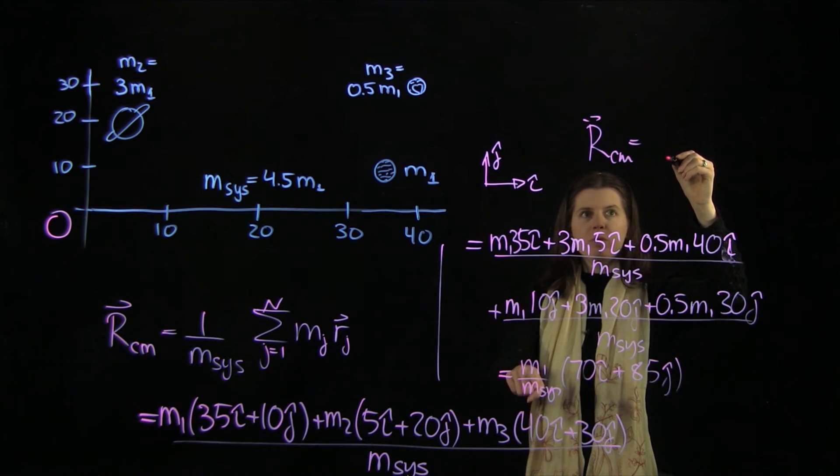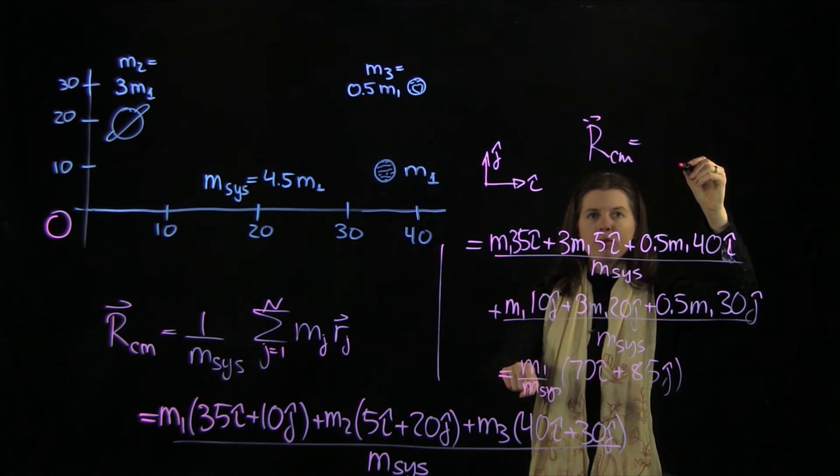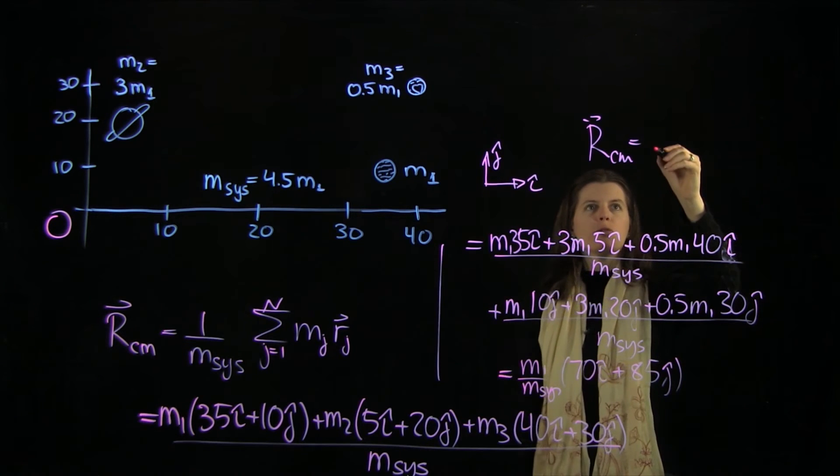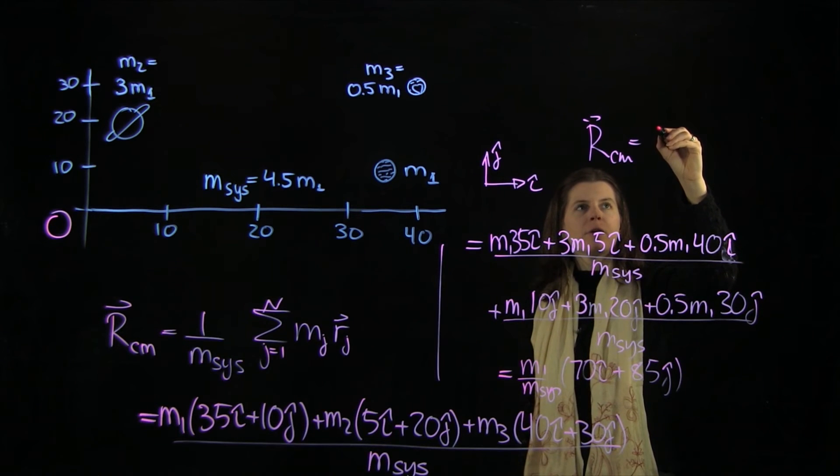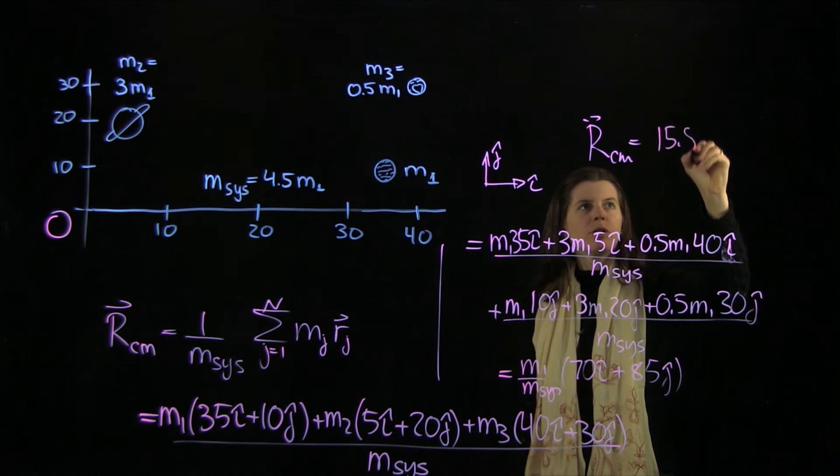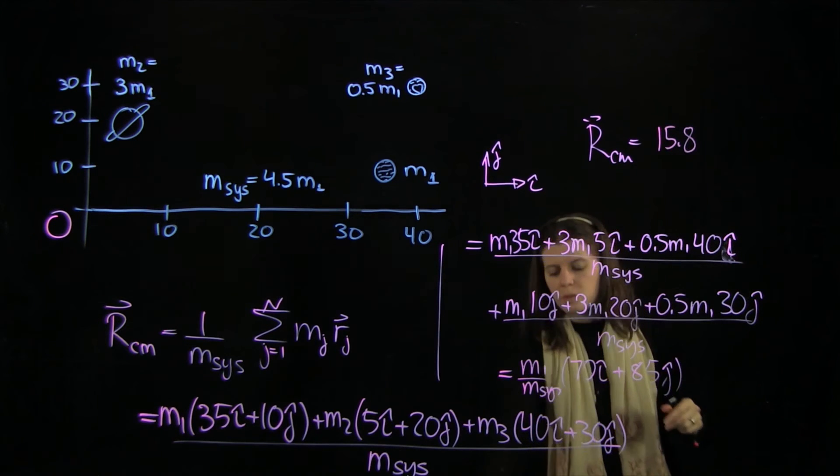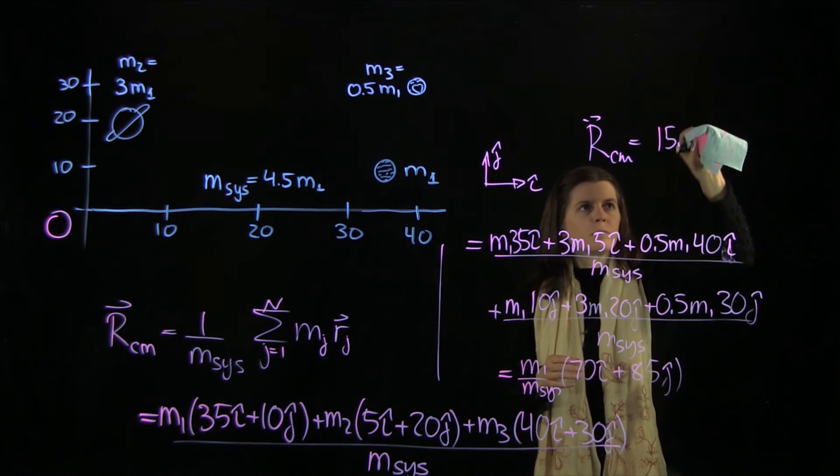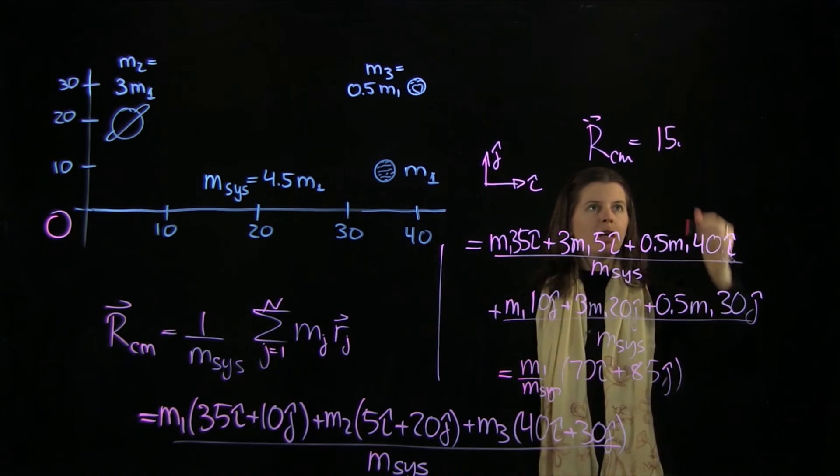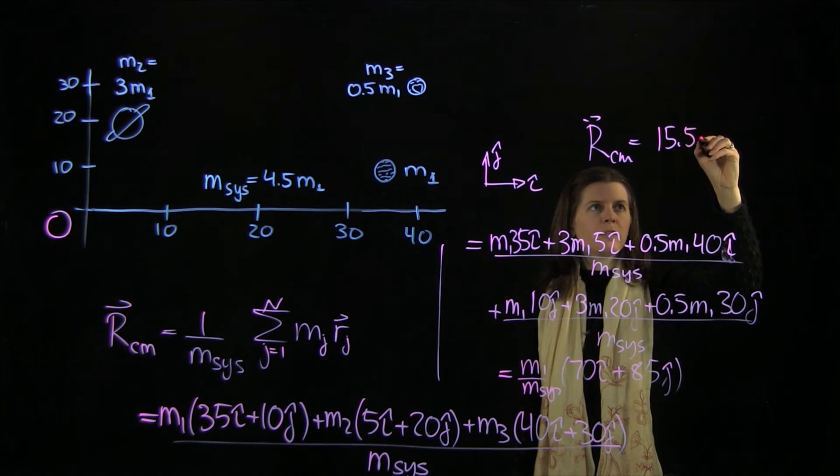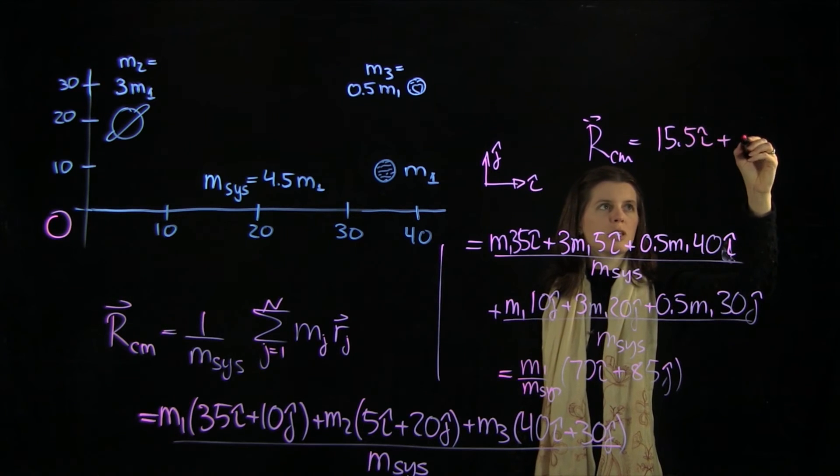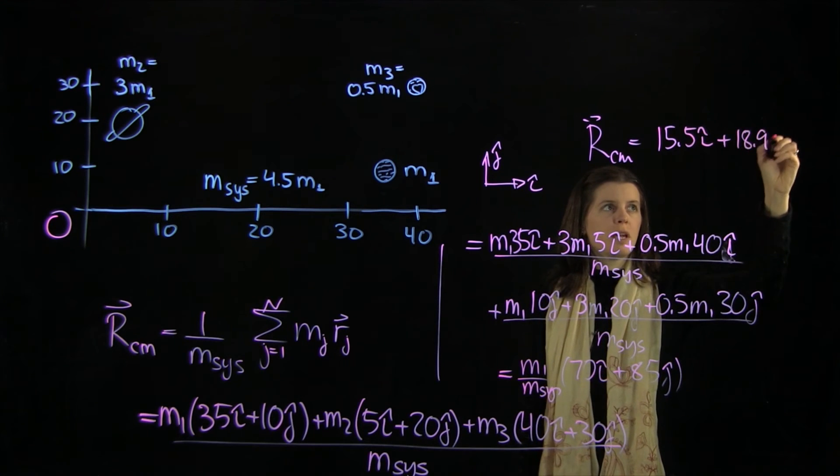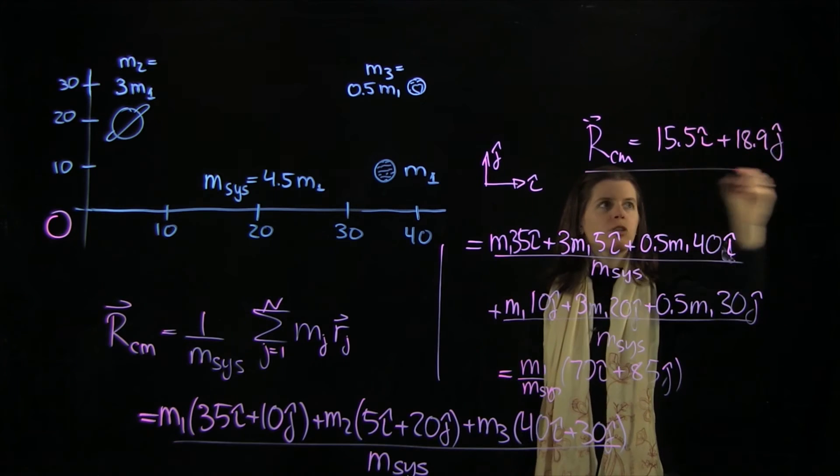So the m goes away, and we have a factor of 1 over 4.5 here. We'll divide this through, and we're going to have 15.5 in the i-hat direction and 18.9 in the j-hat direction.